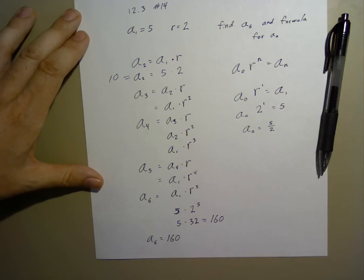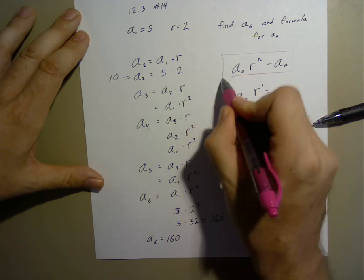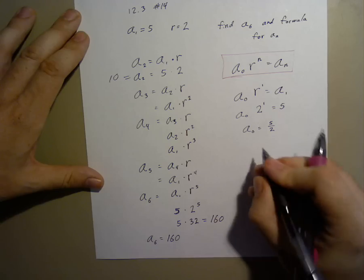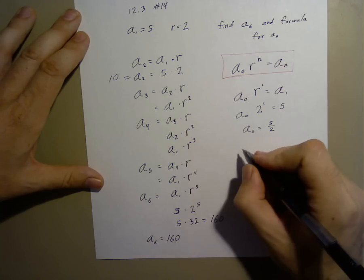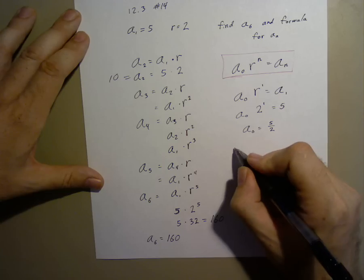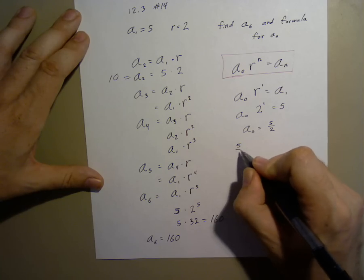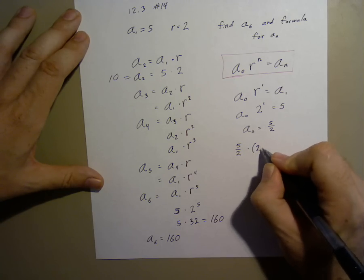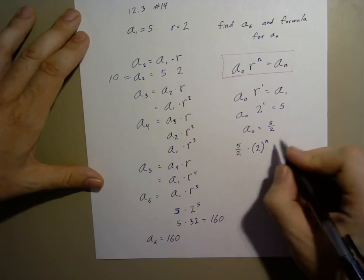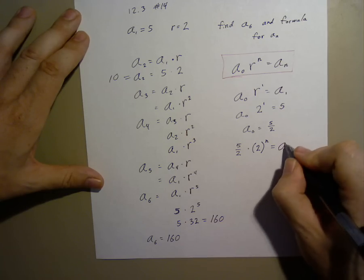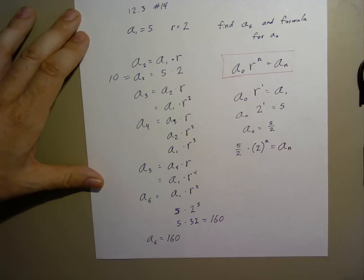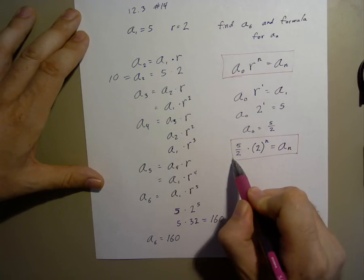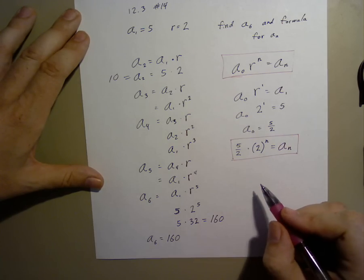That means that our generic formula becomes 5 over 2 times 2 to the n power equals an. That is our generic formula.